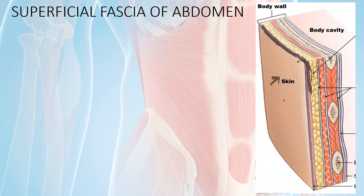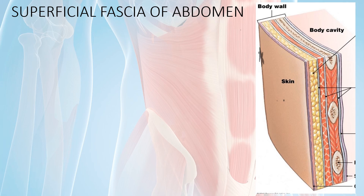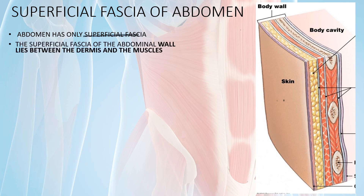Below the hypodermis, which is mostly fat, we have the fascia. Fascias are present between the skin and the muscle throughout the body. In the abdomen, we have only superficial fascia — we don't have deep fascia. This fascia lies between the dermis and the muscle.